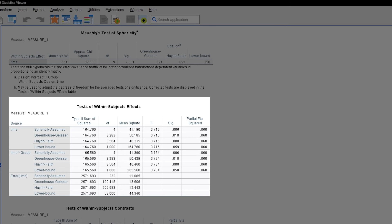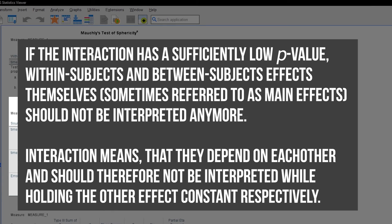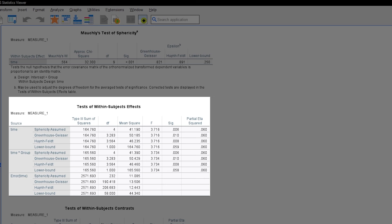The main effects in this case are not interpreted as we just saw that the two effects are interdependent and should not be evaluated in isolation, that is, holding the other effect constant. If the p-value of the interaction effect is not sufficiently small, both main effects should be interpreted. If I now ignore the significant interaction only for the teaching purpose of this video, I would read the main effect as follows.